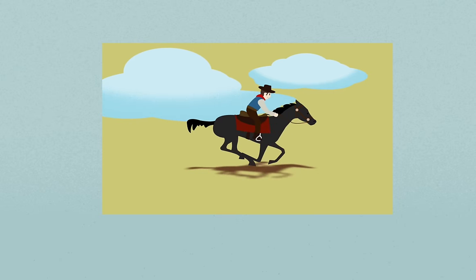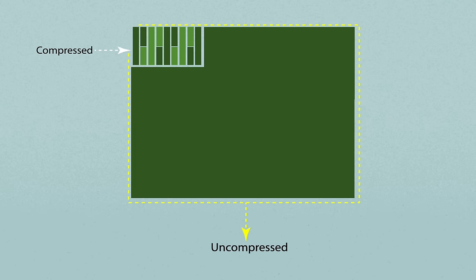After all the redundancies are removed, the resulting data, called the encoded bitstream, uses far less data than the original uncompressed source.